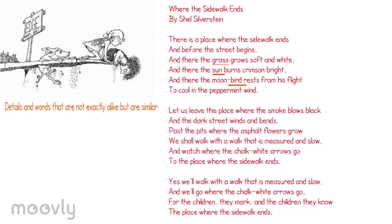Some strands in this poem include nature — bird, sun, grass, and moon — the dark — smoke, dark street, asphalt flowers — and light — sun burns crimson bright.